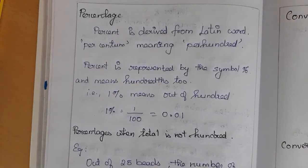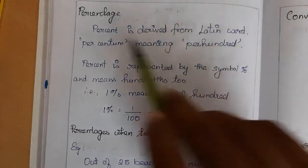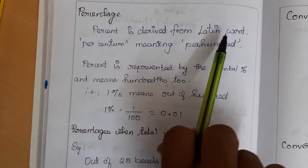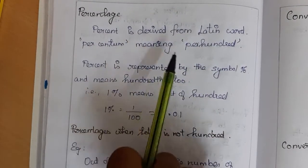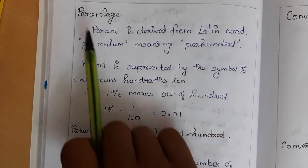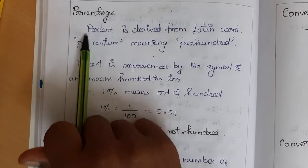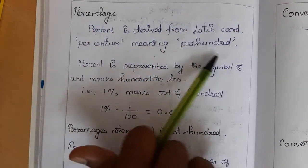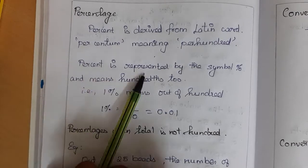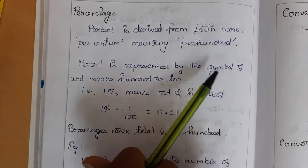Hi students, today we are going to learn about percentages. Percent is derived from the Latin word 'per centum', meaning per hundred. So per means 'for each' and cent means hundred. Percent is represented by the % symbol, which is used to represent percent.